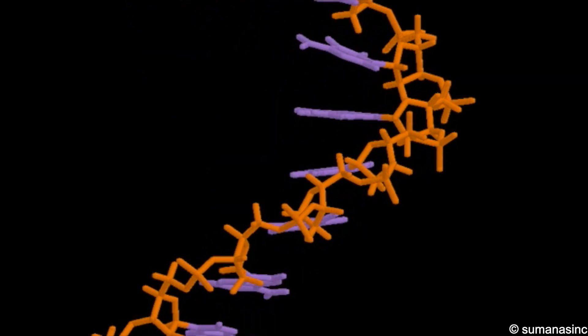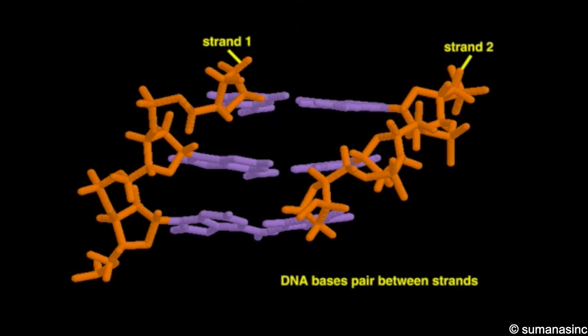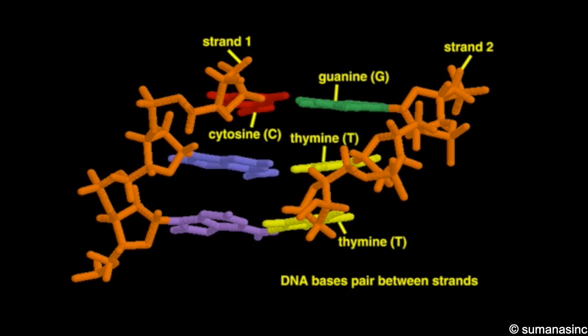In a double helix, each base on one strand is paired to a base on the other strand that lies in the same plane. In these base pairing interactions, guanine always pairs with cytosine, and thymine with adenine.